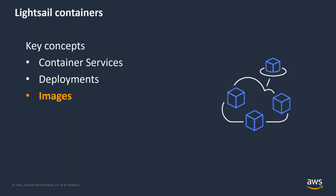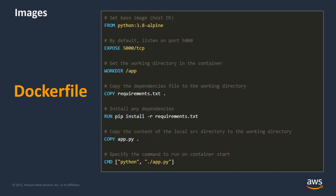Before we get into demos, I'll briefly talk about images. LightSail container services use Docker container images in deployments. You can use container images that are in public repositories like Docker Hub, or you can build your own custom images and push them to LightSail using the CLI. Docker containers are built using Dockerfiles, like the one you see here, which is actually a copy of one I'll use in the demo. The concepts are simple and we've made it really easy to use — you can launch and have a container running in the cloud in just a matter of minutes.